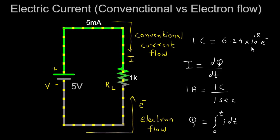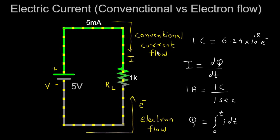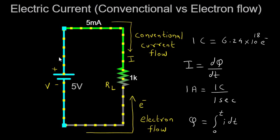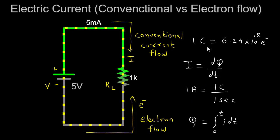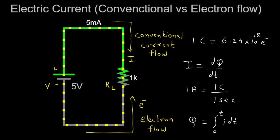To summarize, electric current is the flow of electric charge through a conductor. We have explored the difference between conventional current and electron flow — conventional current flows from the positive terminal to the negative terminal, while electrons actually flow in the opposite direction. We have also examined the relationship between charge and current, defined the ampere as the unit of current, discussed the integration of current to calculate total charge, and established the conversion factor between coulombs and electrons. Thank you for watching, and I'll see you in the next video.